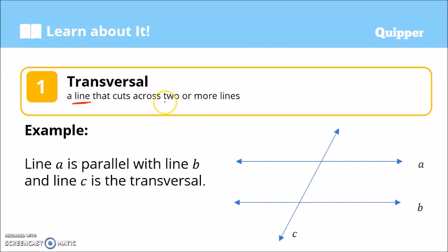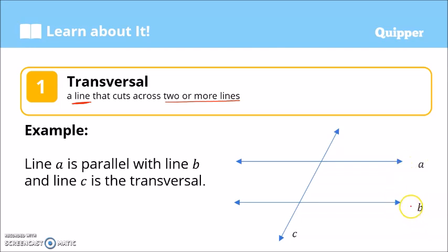In this figure, we have three lines: line A, line B, and line C. Line A is parallel to line B, so line A and line B are parallel lines, and line C is a transversal — the line that cuts across the two parallel lines.